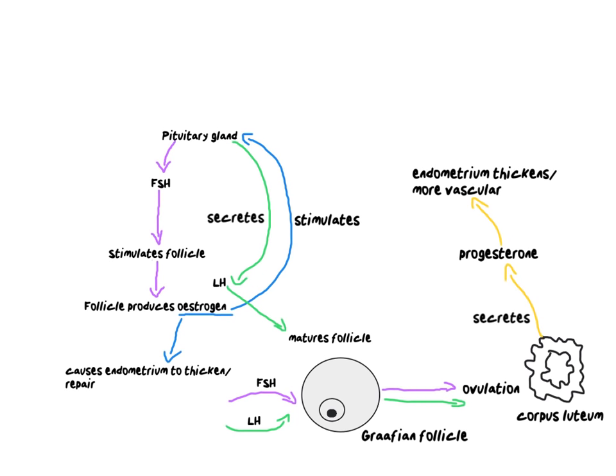At the same time, we can't forget our original thickening hormone — estrogen. Both estrogen and progesterone are thickening the endometrium. In particular, progesterone is making it more glandular and vascular — meaning more glands and more blood vessels.